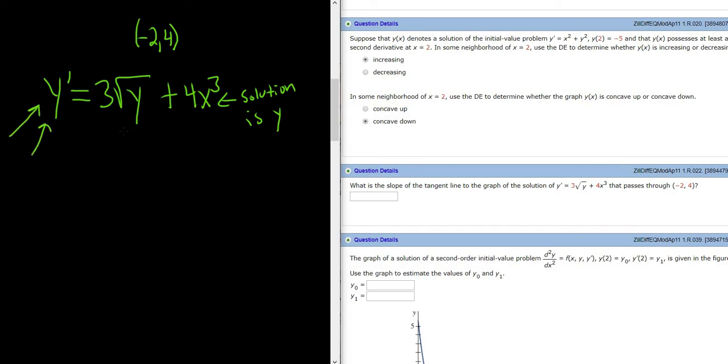They're giving us the actual equation for the slope, so all we have to do is plug in -2 to find the slope when x = -2. So y'(-2) = 3√y where y = 4, plus 4x³ where x = -2, so (-2)³.